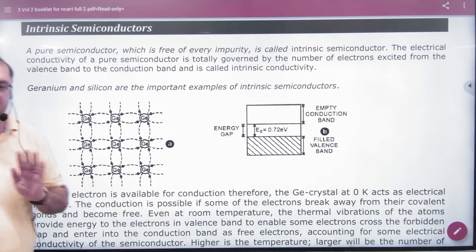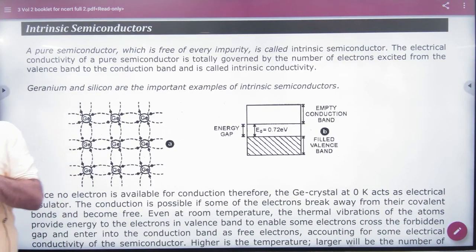Next is Intrinsic Semiconductor. Intrinsic and Extrinsic are two kinds of semiconductors. Intrinsic Semiconductor is a pure semiconductor.